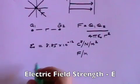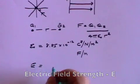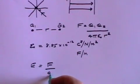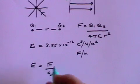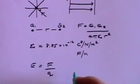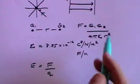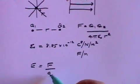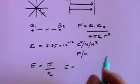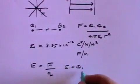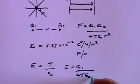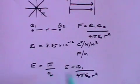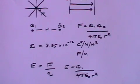The electric field strength is given by the force per unit charge, so E equals F over q. If we say that q2 is our unit charge q, then E equals q1 divided by 4 pi epsilon naught r squared, because q2 is q and F divided by q gives you q1 over 4 pi epsilon naught r squared. That is the value of the electric field strength.